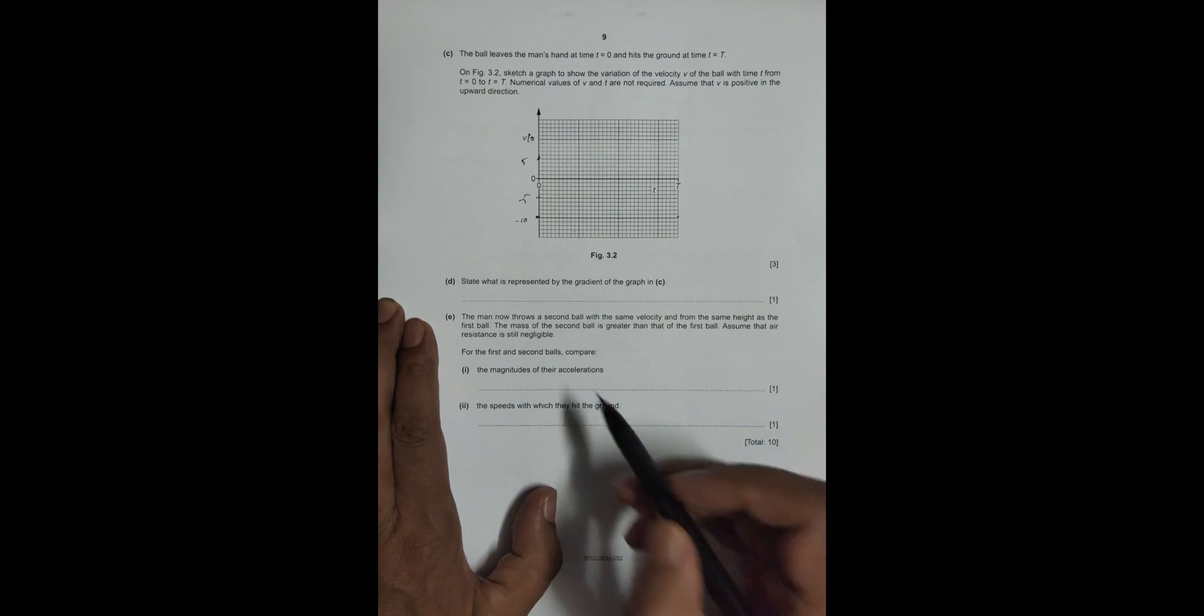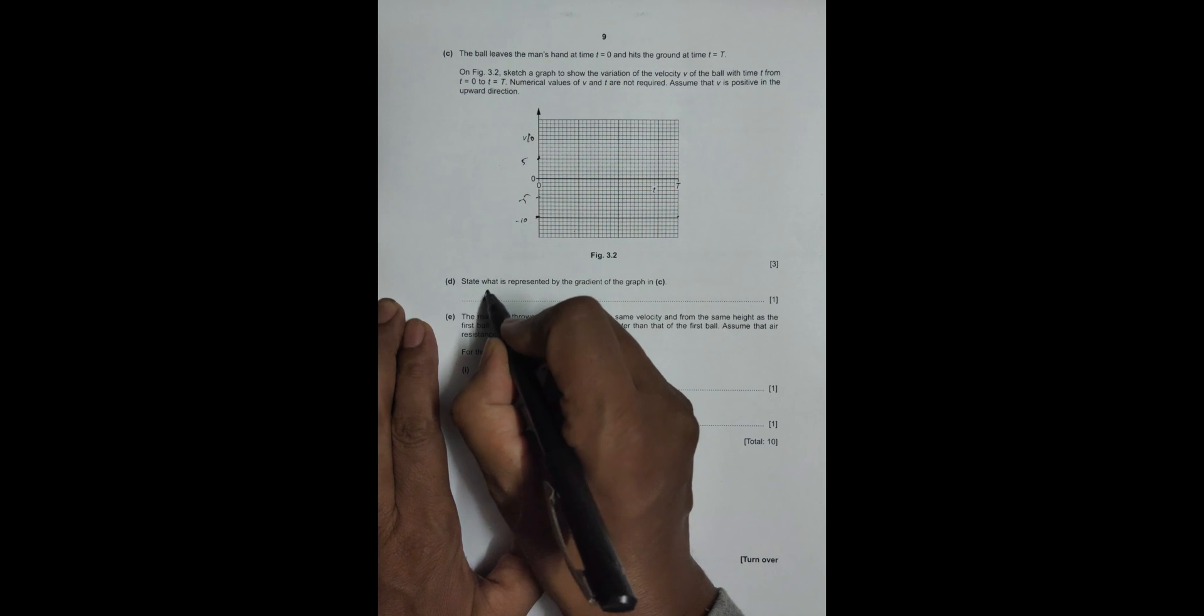Now, part d: state what is represented by the gradient of the graph. Of course, it represents the acceleration, and here it is negative because the slope is negative.